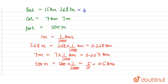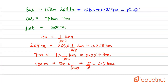Now we can express the bus distance in kilometers: 15 kilometers 268 meters = 15 + 0.268 = 15.268 kilometers. For the car: 7 kilometers 7 meters = 7 + 0.007 = 7.007 kilometers.